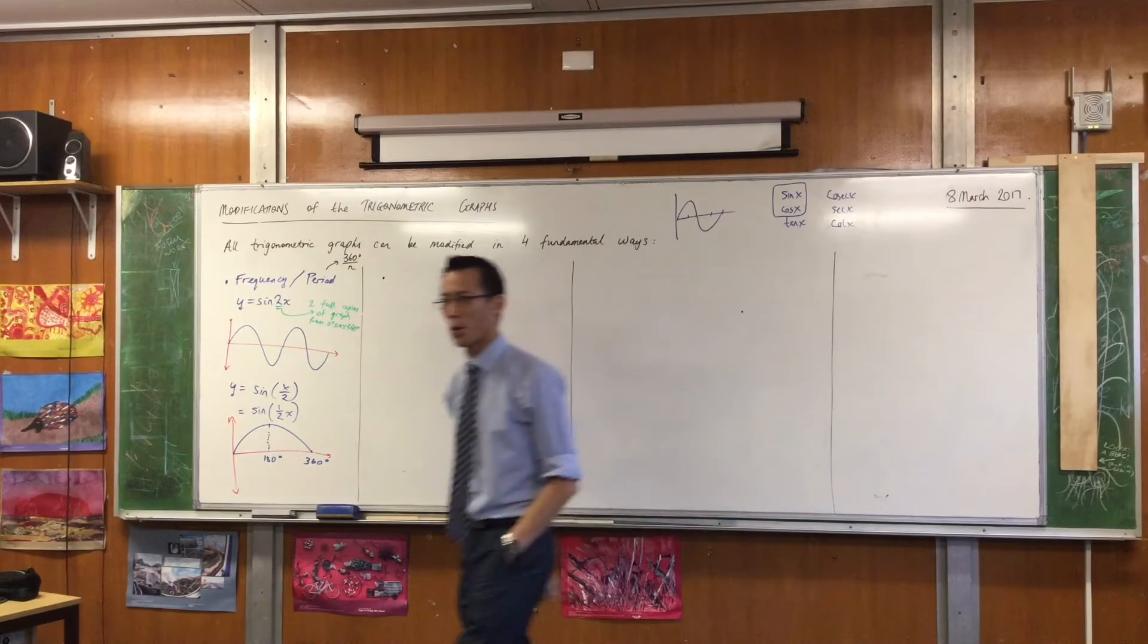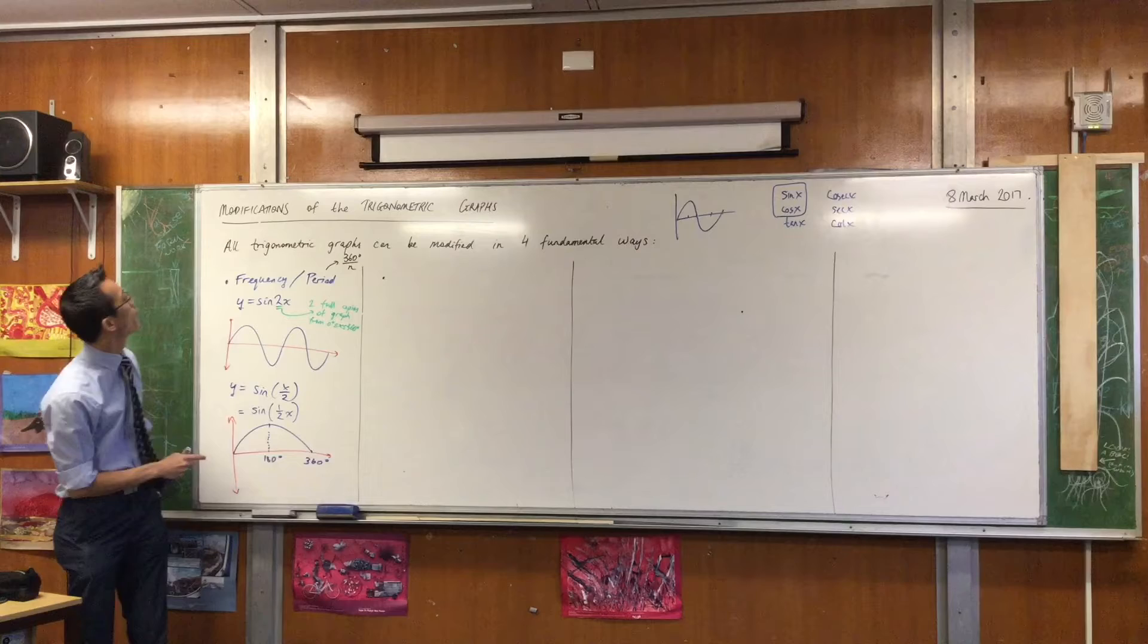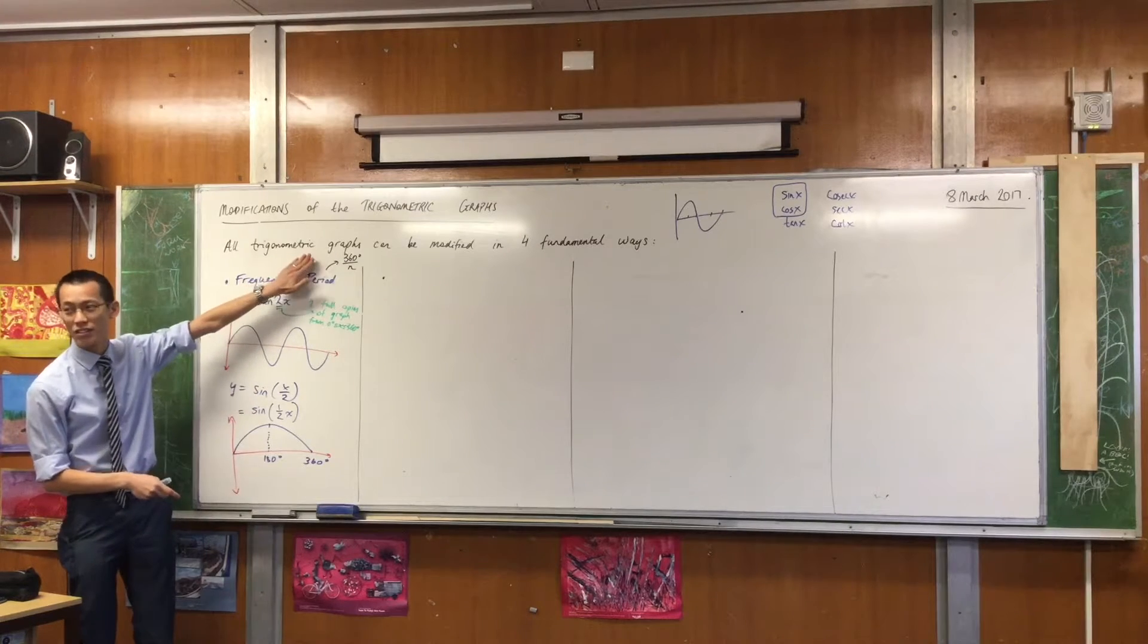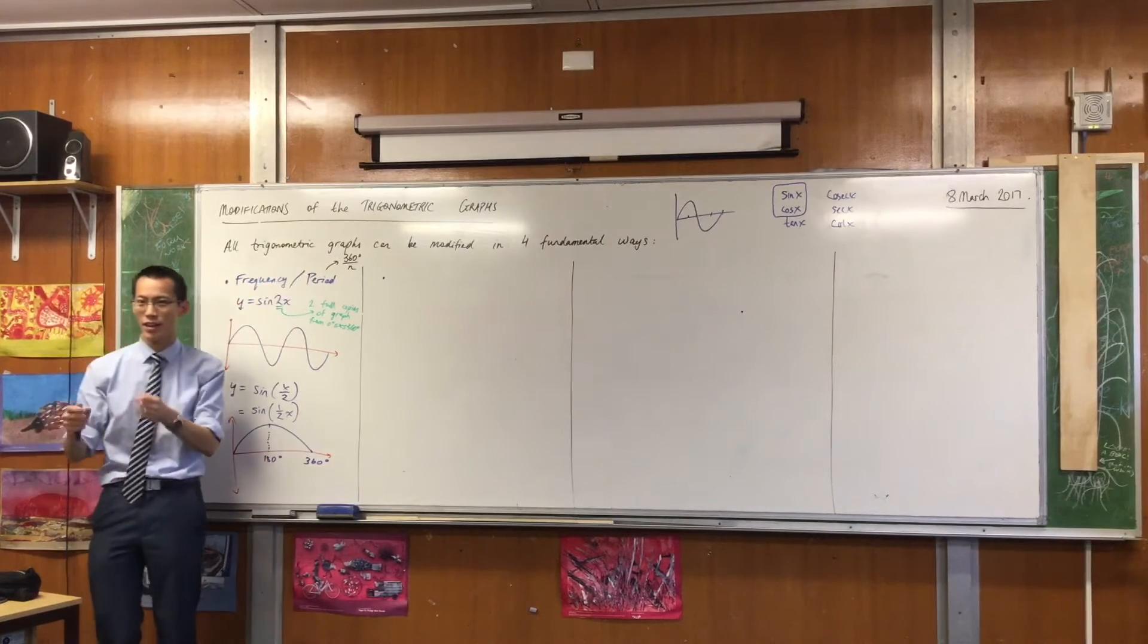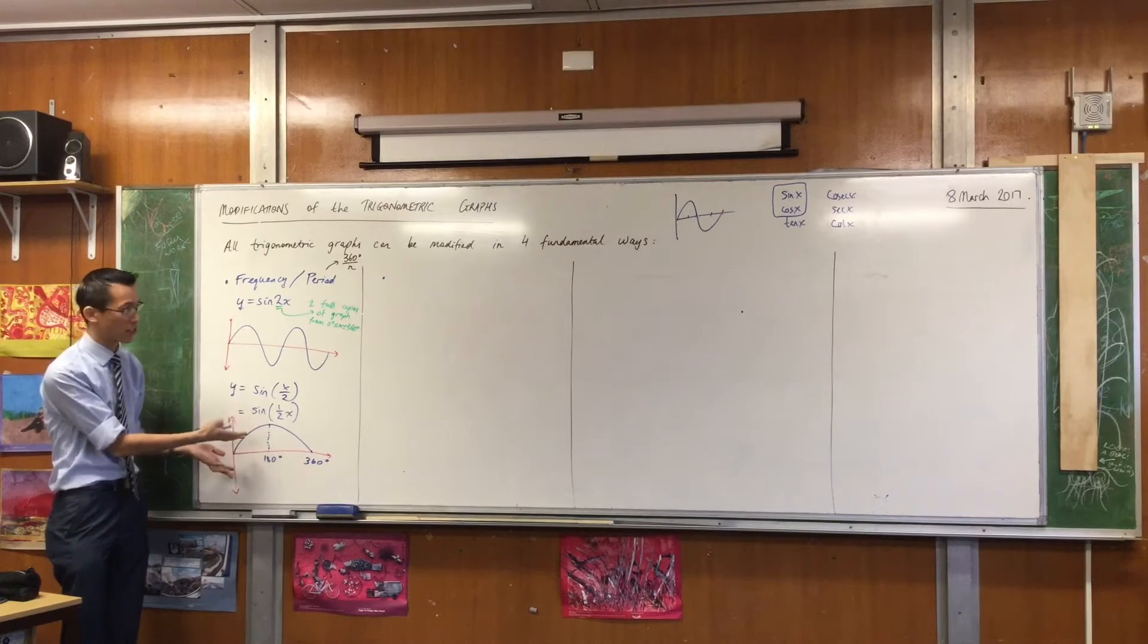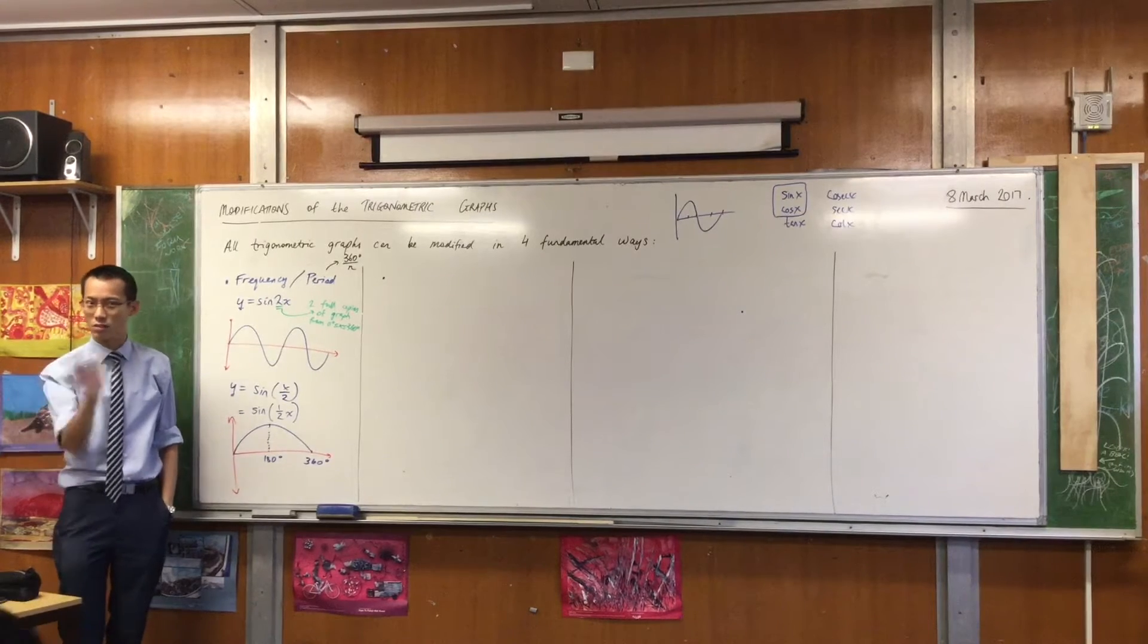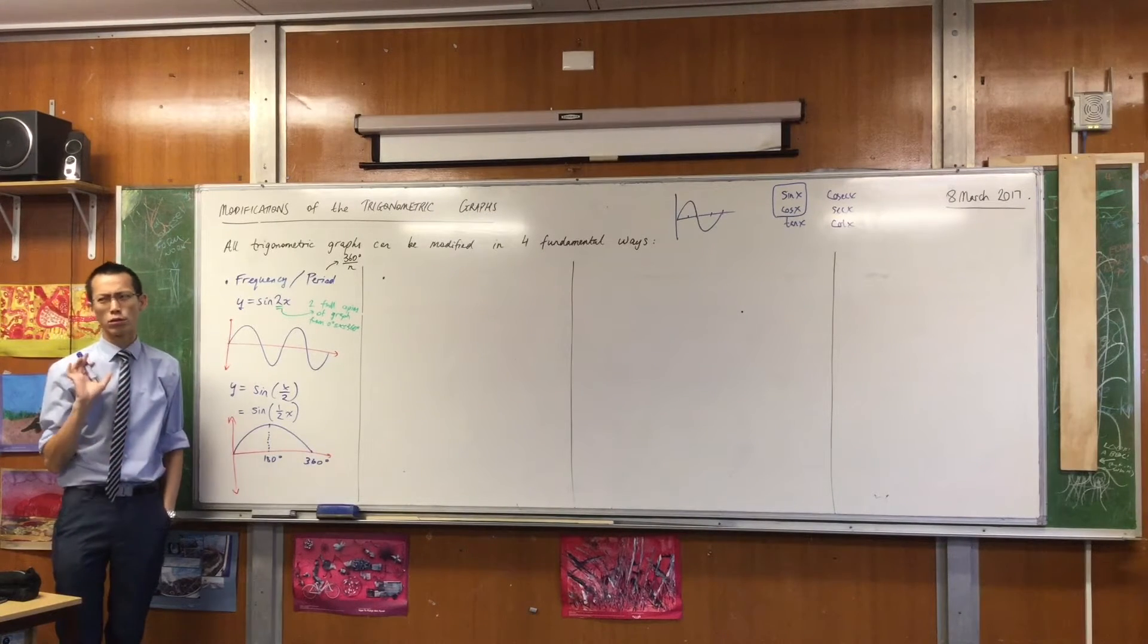Like sine squared x. Okay, so we will get to sine squared x soon, but for now I want to look at somewhat simpler modifications of the graphs, which are basically sort of moving it around but still somewhat recognizable as the sine x curve or the cos x curve. When we get to sine squared, which is actually more of an extension concept, you'll see that looks quite different.